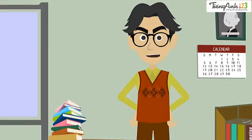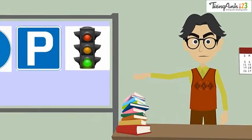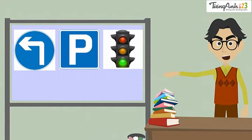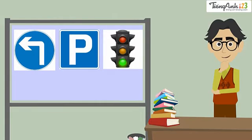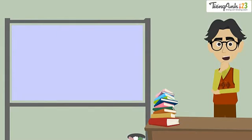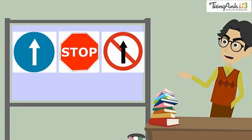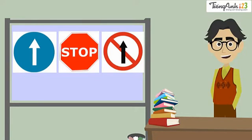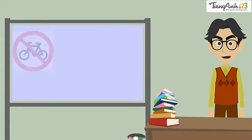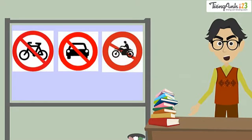Question one is for Long — look at these pictures: which sign tells you that you can park here? Question two is for Lad — which sign tells you that you can go ahead?